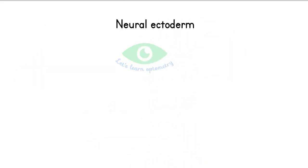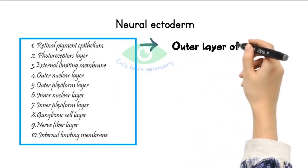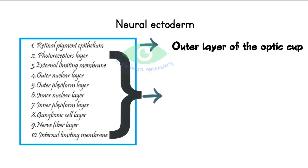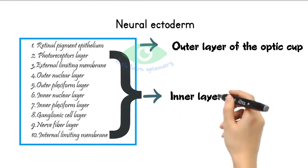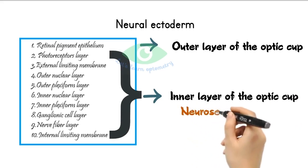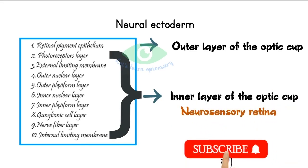The retina is derived from the neural ectoderm. The outer pigmented layer is derived from the outer layer of the optic cup, and the remaining nine layers are derived from the inner layers of the optic cup. The term 'retina' refers to all ten layers, but 'neurosensory retina' refers to all nine layers excluding the retinal pigment epithelium.